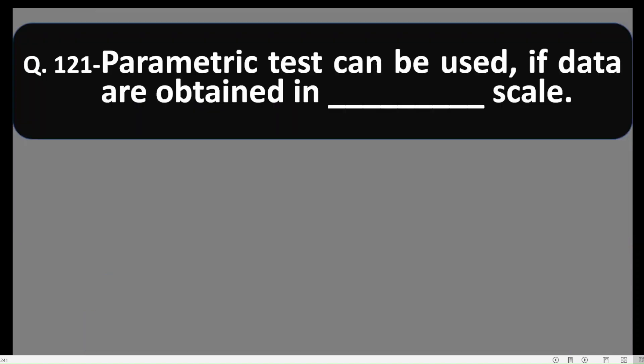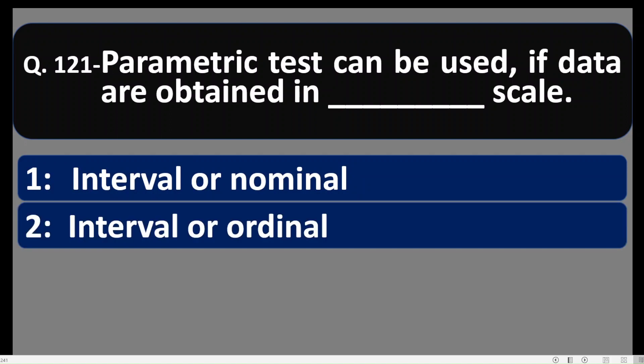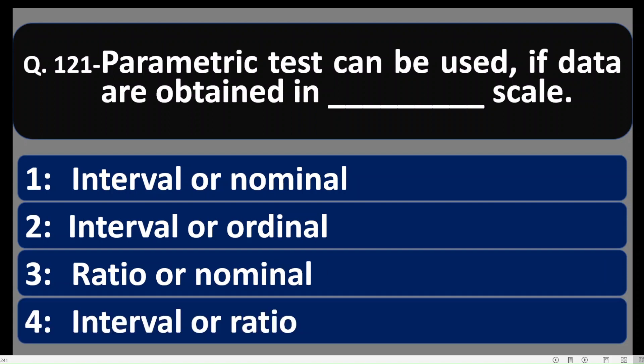Question number 121: Parametric tests can be used if data are obtained in which scale? Options: 1) interval or nominal, 2) interval or ordinal, 3) ratio or nominal, 4) interval or ratio. Parametric tests can be applied only if the data are obtained in interval or ratio scale. So option number 4 is correct.